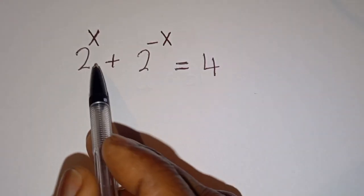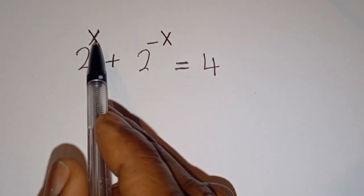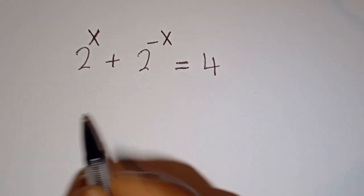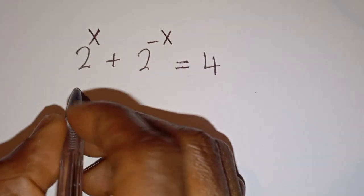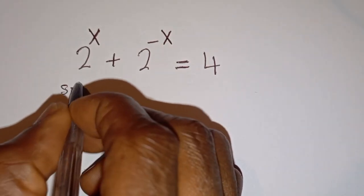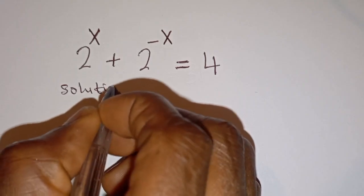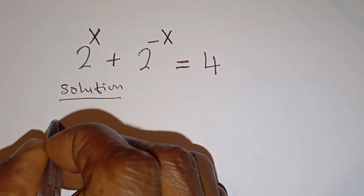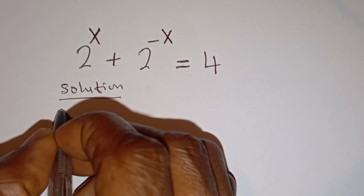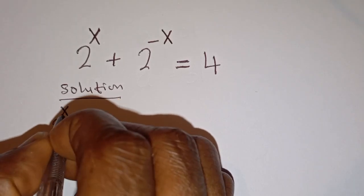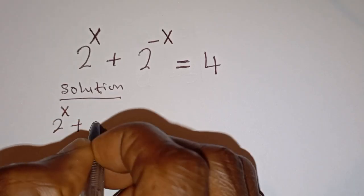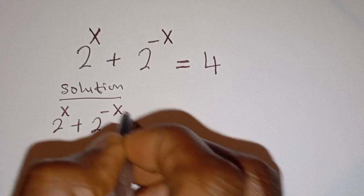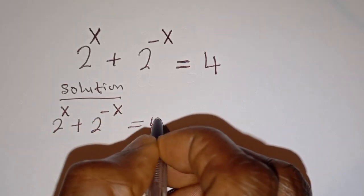Hello. How to solve for x in this equation: 2 to the power of x plus 2 to the power of minus x is equal to 4. Solution. We have 2 to the power of x plus 2 to the power of minus x is equal to 4.